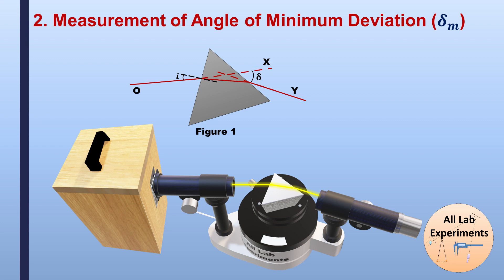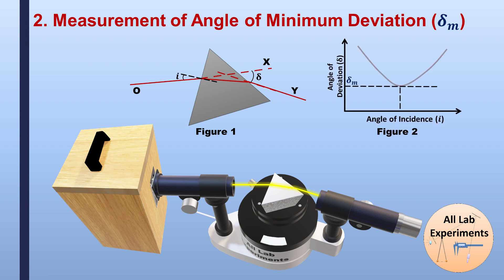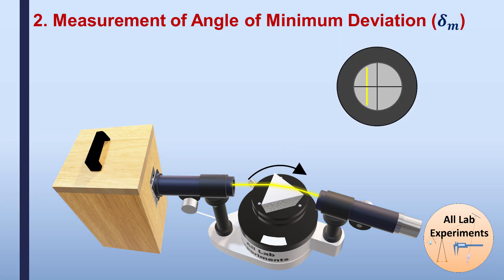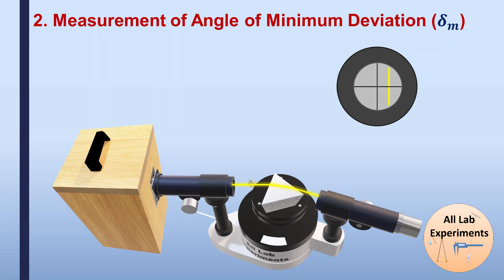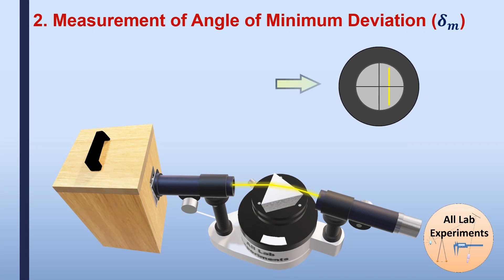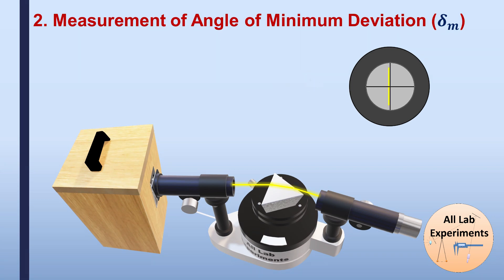The prism is placed so that light from O deviates to Y, with a small angle of incidence. To find the minimum deviation, we need to increase the angle of incidence by rotating the prism table. As we rotate, we observe in the telescope that the light moves to a position and then starts coming back — meaning deviation decreases and then starts increasing again. We stop rotating when the light starts moving back, indicating the minimum deviation position.